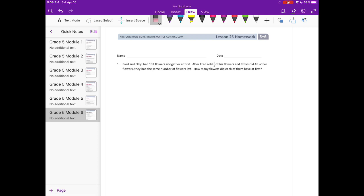Grade 5 Module 6 Lesson 25 homework, number one. Fred and Ethel had 132 flowers all together at first. After Fred sold 1/4 of his flowers and Ethel sold 48 of her flowers, they had the same number of flowers left. How many flowers did each of them have at first? What I'm going to do is draw some tape diagrams to represent Fred and Ethel.